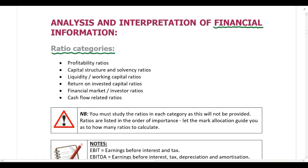It's very important — you must study all of the ratios in each category as this will not be provided. At this level, it's highly unlikely that you are going to get a required that says calculate the gross profit margin or calculate the net profit margin. That's too simple. At this level, you are going to get a required that says analyze and interpret the profitability ratios of X, Y, Z. So you need to know which ratios fall in the category profitability so that you know which ratios to calculate.